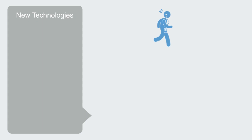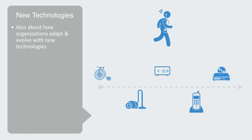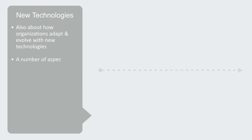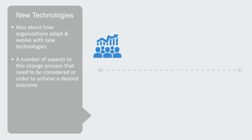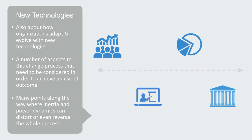The domain of socio-technical systems is not just about how people interact with pre-existing technologies, but also about how organizations adapt to and evolve with new technologies. Ever since the advent of the industrial revolution, social organizations have been subjected to continuous technological change that requires us to adapt to new systems and new ways of working. There are a number of aspects to this change process to consider, such as identifying and setting the system's goals, training new operators, integrating subsystems into the whole, and stabilizing new patterns of working. And of course there are many points along the way where inertia and power dynamics can distort or even reverse the process.